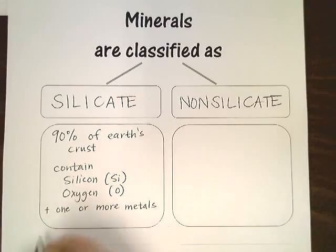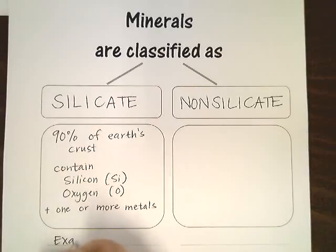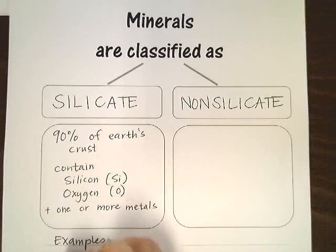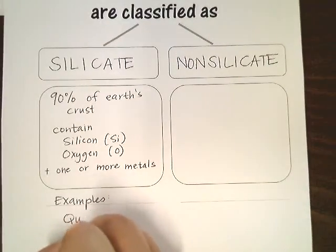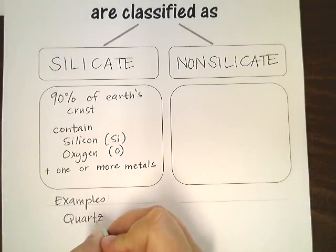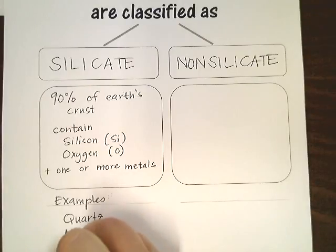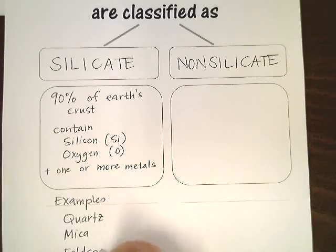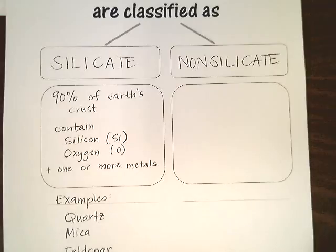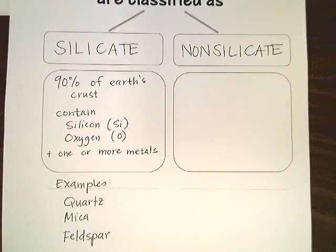There are some easy examples. The easiest one to remember, because it's really common and y'all know what it is, is quartz. And mica, which I showed you in class — it flakes off — and feldspar, which is just another common one. If it's not quartz and you pick it up, it's probably feldspar.